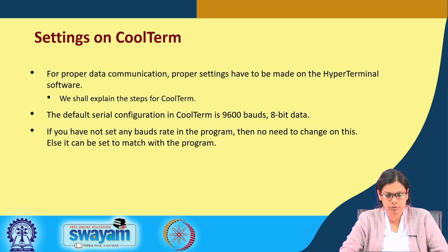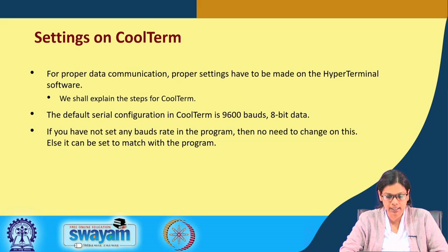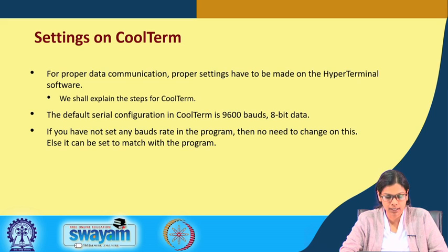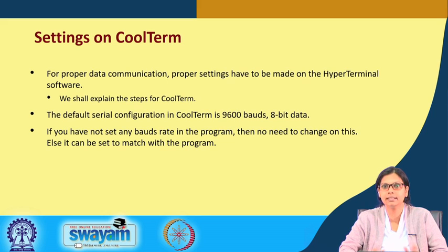For setting up Cool Term for proper data communication, the proper settings have to be made in the hyper terminal software. The default serial configuration in Cool Term is 9600 baud rate and 8 bits. If you want to change that you have to do so, but for this we need not change it. If you have not set any baud rate in the program then no need to change, else it can be set to match with the program. This setting must be done prior to using Cool Term.